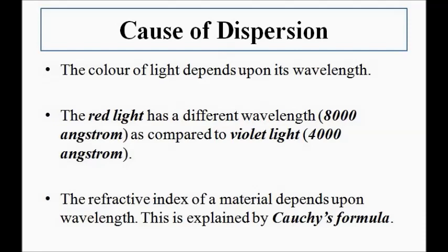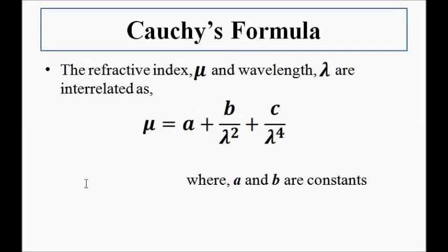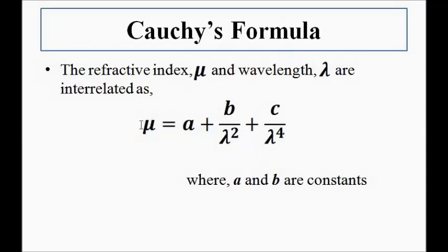According to Cauchy's formula, which interrelates refractive index and wavelength, the refractive index of any material varies as per the wavelength of the light passed through it. The formula is: mu equals A plus B over lambda squared plus C over lambda to the fourth. There is an inverse relationship — although not a direct inverse due to the square and fourth power terms, an increase in wavelength causes a decrease in refractive index, and a decrease in wavelength causes an increase in refractive index. A, B, and C are constants unique to a particular material.